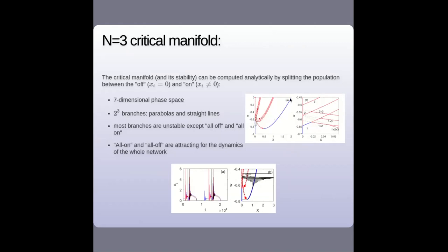Simulating n=3: all lasers start in the off state on one branch of the critical manifold. Laser one starts relaxation oscillations and reaches its own state. Later laser two starts and reaches the critical manifold — interestingly, this branch is supposed to be unstable, yet the system goes there. Finally laser three starts and everyone reaches the attractive branch of the critical manifold. This is shown as a projection in phase space.